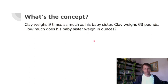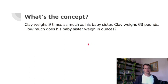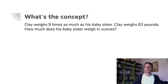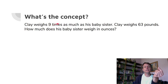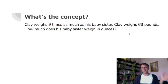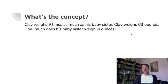Next problem: Clay weighs nine times as much as his baby sister. Clay weighs 63 pounds. How much does his baby sister weigh in ounces? Read carefully — there's an easy mistake here. You might think: nine times 63 is 540 plus 27, which is 567. But that would mean his baby sister weighs 567 pounds, which is clearly unreasonable.